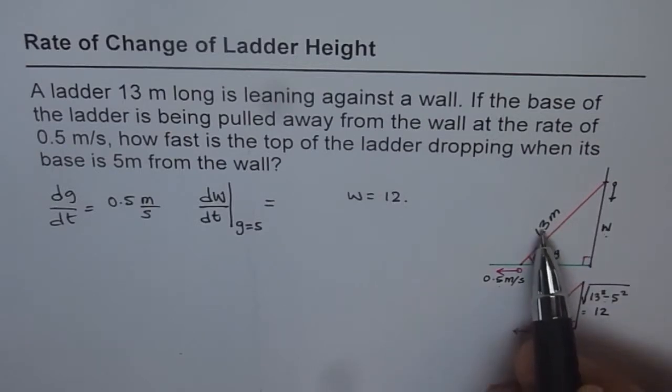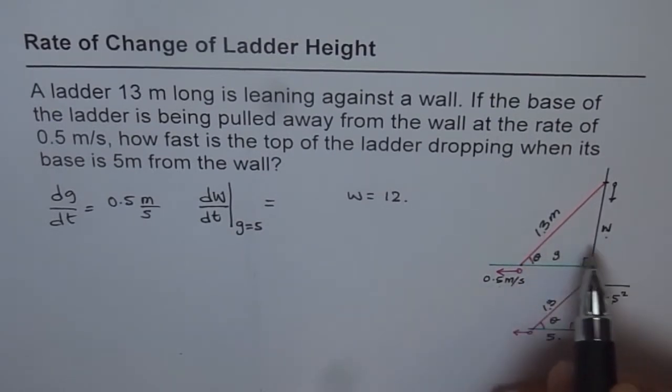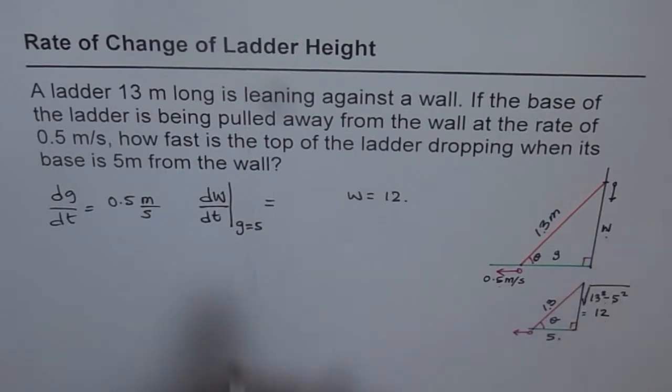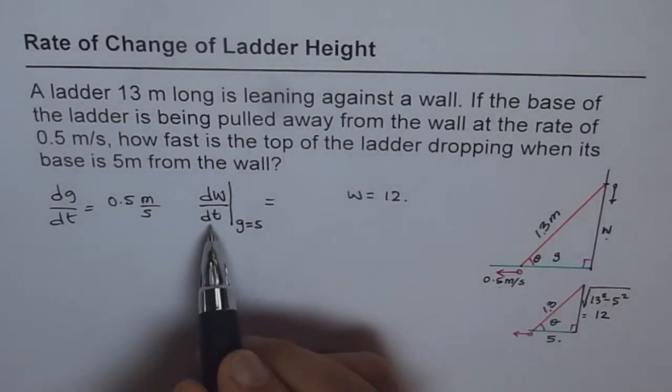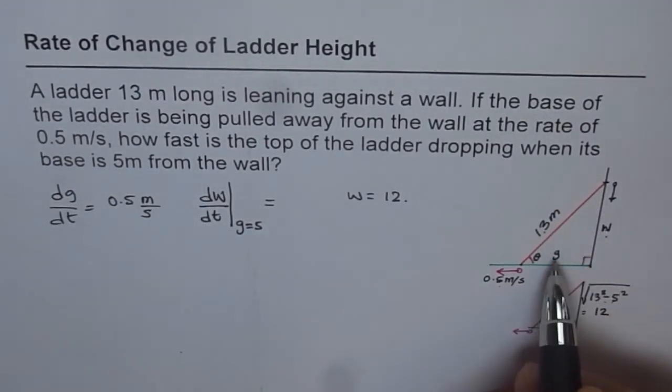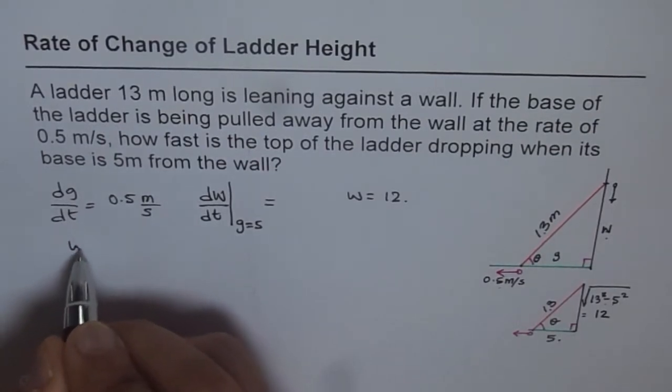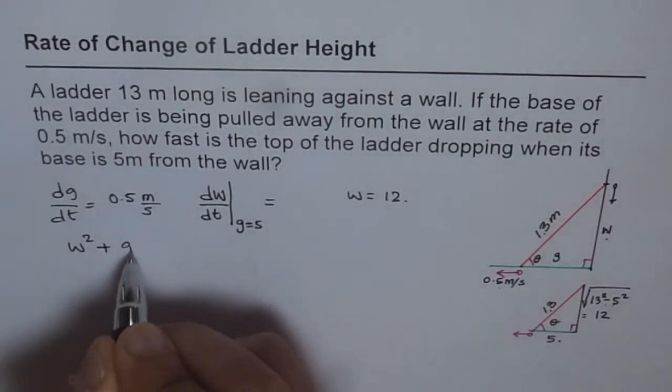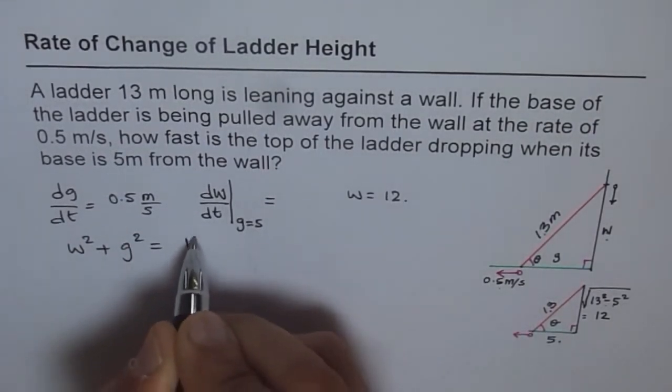We can have W, G, and 13. These three things are related with the Pythagorean theorem. We know 13 squared equals W squared plus G squared. But what do we need to find? We need to find dW/dt. So let us write W and G on the left side.